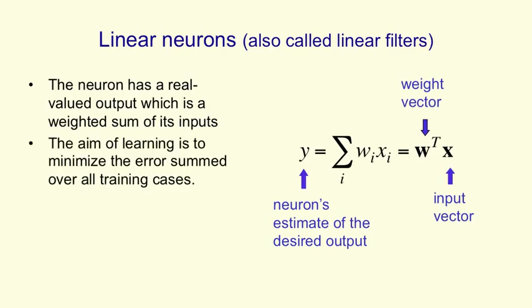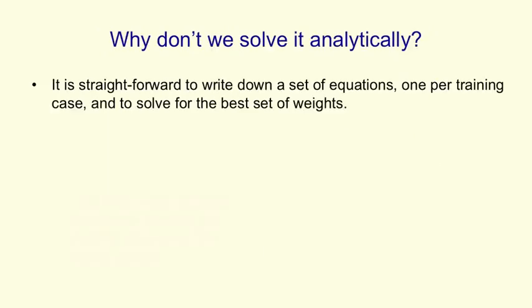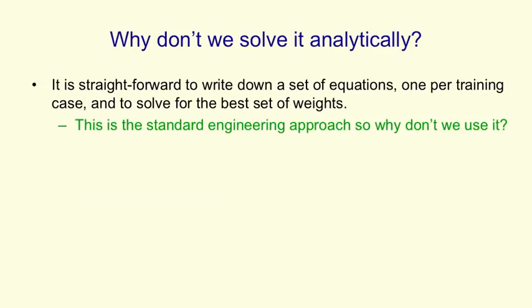The aim of the learning is to minimize the error summed over all training cases. We need a measure of that error, and to keep life simple, we use the squared difference between the target output and the actual output. So one question is, why don't we just solve it analytically? It's straightforward to write down a set of equations, with one equation per training case, and to solve for the best set of weights. That's the standard engineering approach — so why don't we use it?